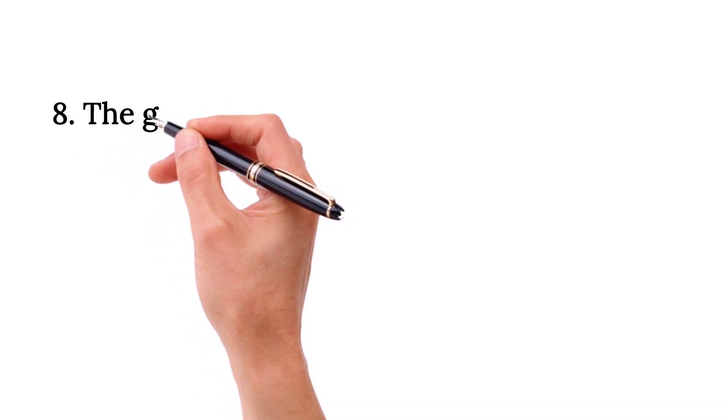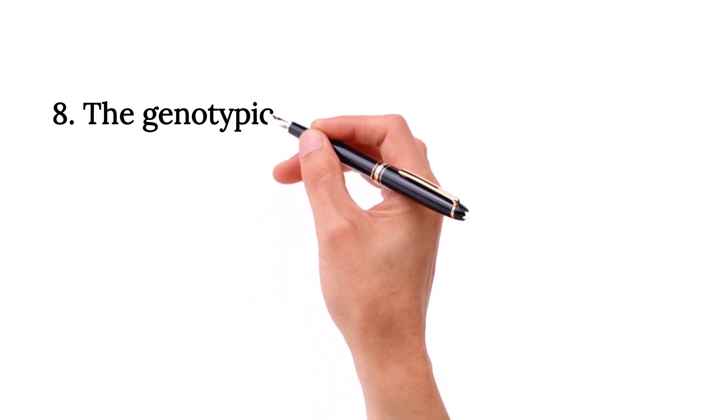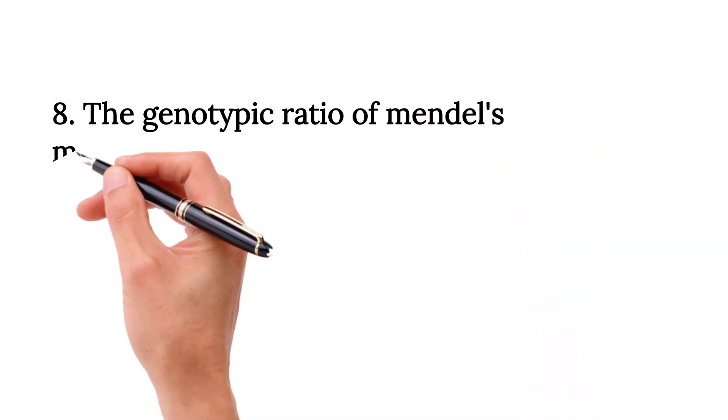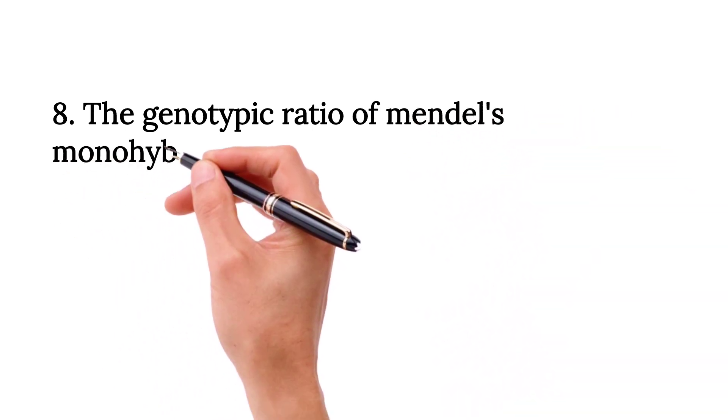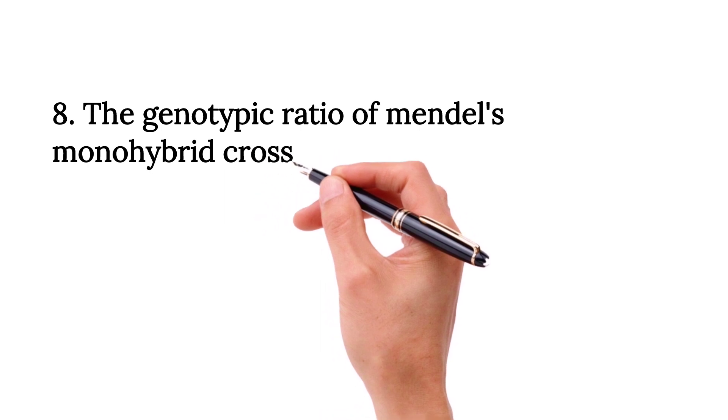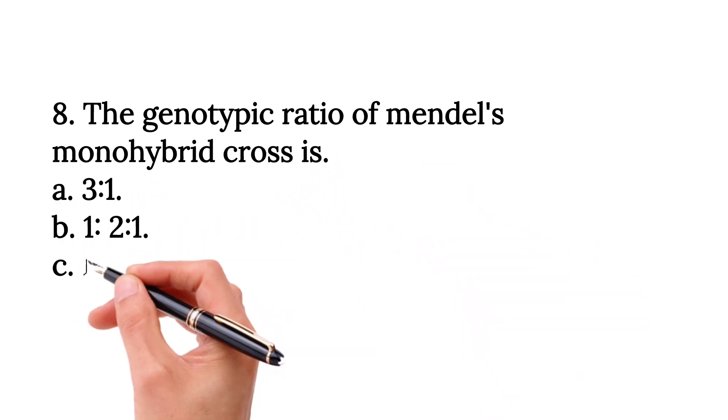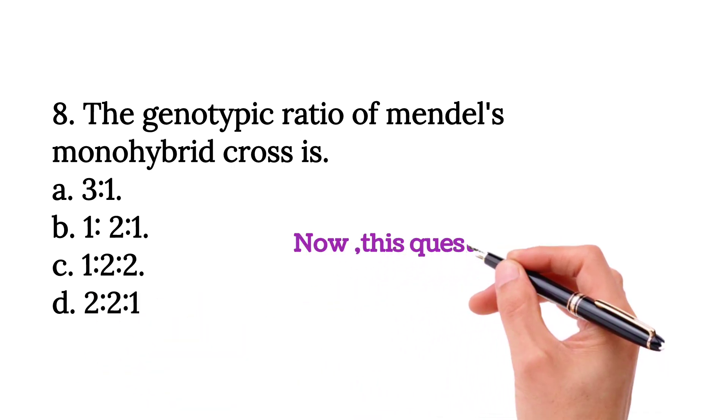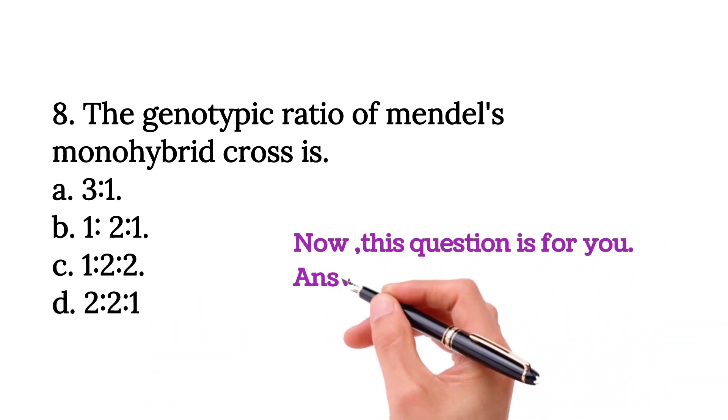The genotypic ratio of Mendel's monohybrid cross is Option A, 3 ratio 1, Option B, 1 ratio 2 ratio 1, Option C, 1 ratio 2 ratio 2, Option D, 2 ratio 2 ratio 1. Now this question is for you. Answer it in the comment section.